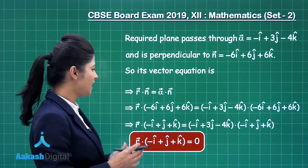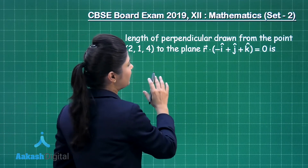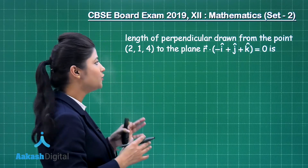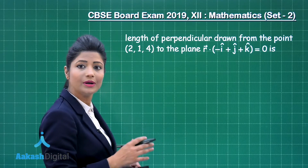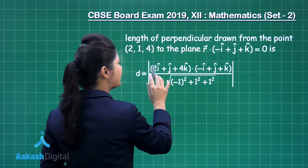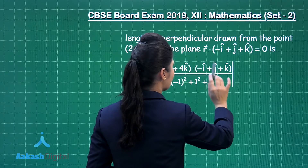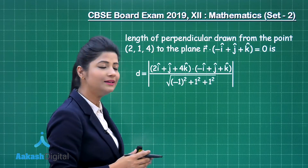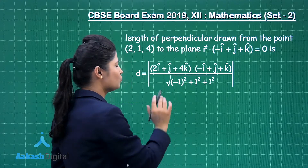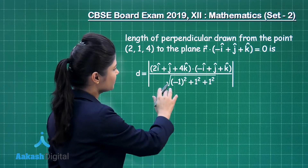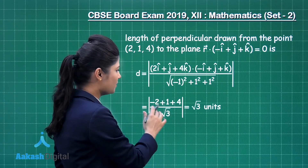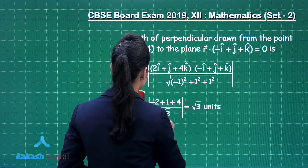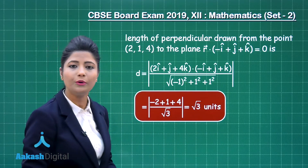Next, we find the length of the perpendicular drawn from the point (2, 1, 4) to the plane R · (-i + j + k) = 0. The distance d is given by the modulus of (2i + j + 4k) · (-i + j + k) divided by √((-1)² + 1² + 1²). The numerator gives 2(-1) + 1(1) + 4(1) = -2 + 1 + 4 = 3, and the denominator is √3. Therefore d = 3/√3 = √3. This is the required length of the perpendicular.